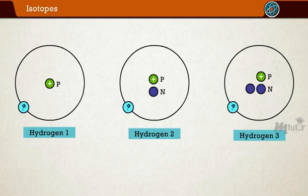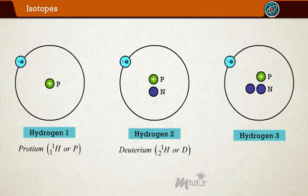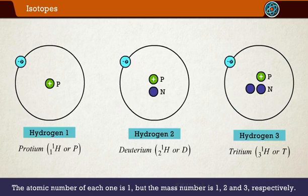take the case of a hydrogen atom. It has three atomic species, namely protium, deuterium, and tritium. The atomic number of each one is one, but the mass number is one, two, and three, respectively.